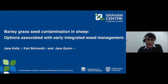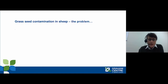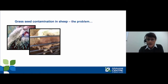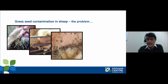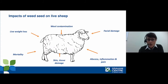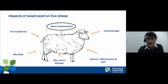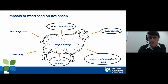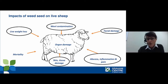Today my research is looking at barley grass seed contamination in sheep — some work from my PhD. Essentially, grass seed is an issue where the seeds of certain grasses penetrate the flesh, eyes, facial organs, skin and into the carcass of grazing sheep. It's a huge problem causing significant issues for live animals including wool contamination, skin and tissue damage, facial damage, organ damage, considerable abscess inflammation and pain, and we get considerable live weight loss and mortalities, particularly in weaner animals.